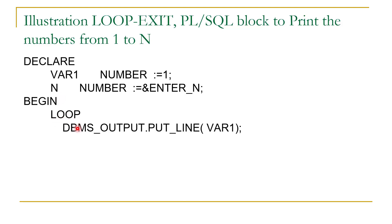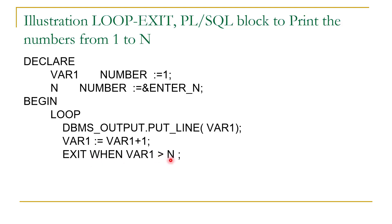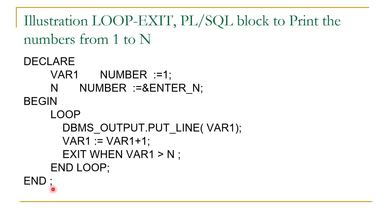In the BEGIN section we use a simple loop. We start with LOOP, then use DBMS_OUTPUT.PUT_LINE to display the value of var1. Then var1 is incremented: var1 := var1 + 1. After this we check its value with EXIT WHEN var1 > n. We exit from the loop when the variable exceeds n, then complete the loop with END LOOP. This group of statements executes continuously until var1 is greater than n. We complete the PL/SQL block with the END statement.